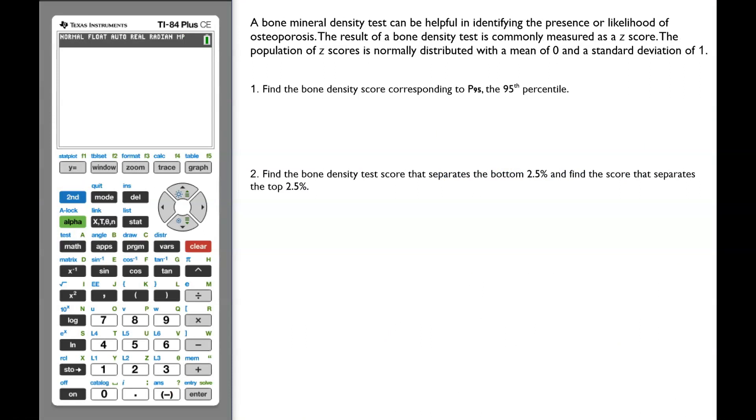So, we will now reverse the format to find the z-scores knowing the areas. We are going to be using the same example with the bone mineral density test. It has a standard normal distribution.